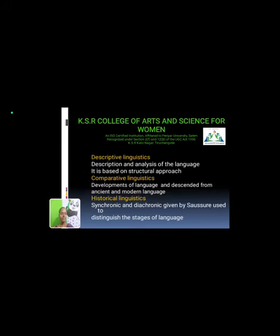There are three types in linguistics: descriptive linguistics, comparative linguistics, and historical linguistics. Descriptive linguistics is based on the structural approach. Comparative linguistics involves the development of language descended from ancient to modern language. In historical linguistics, synchronic and diachronic, given by Saussure, are used to distinguish the stages of linguistics. These are the main types in linguistics.